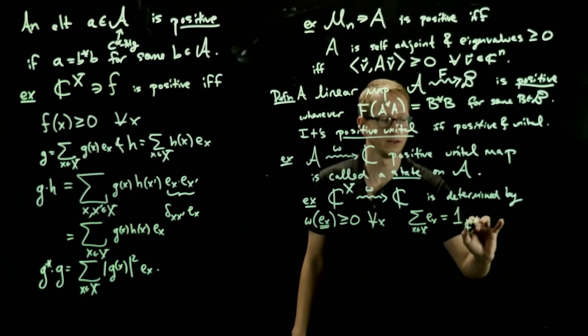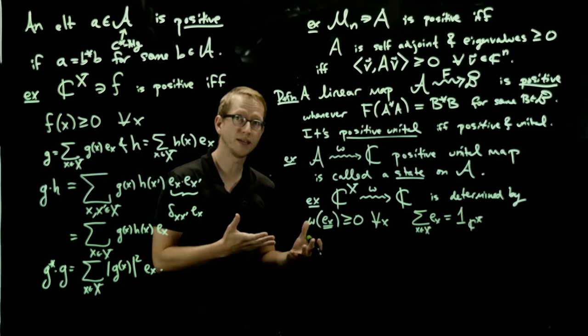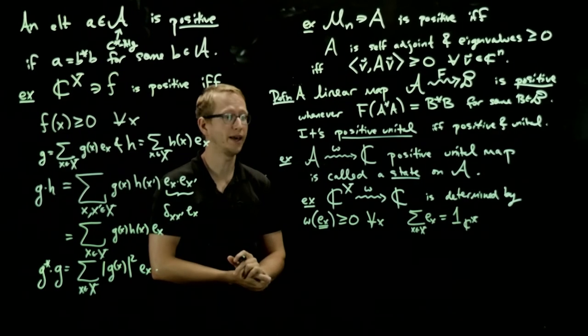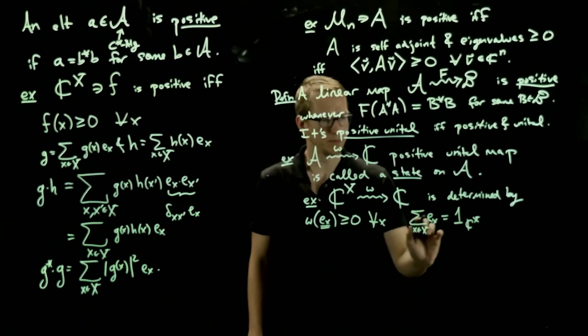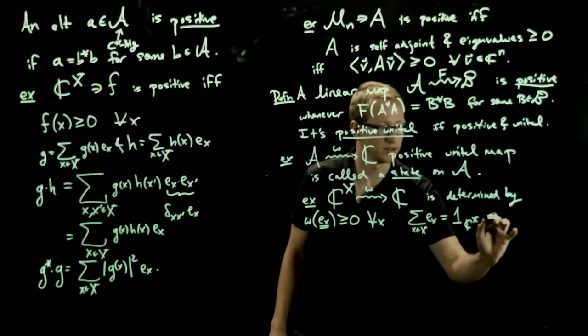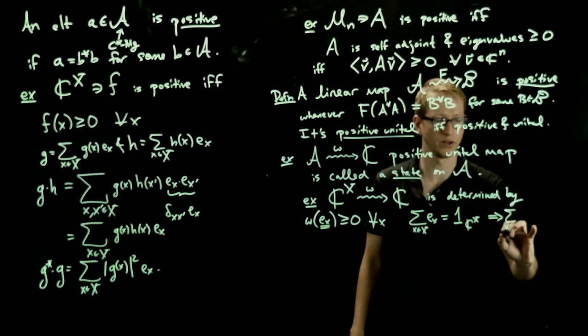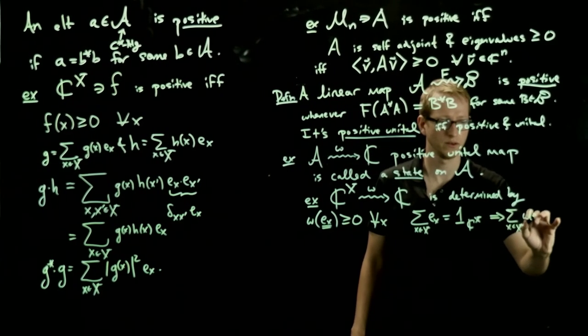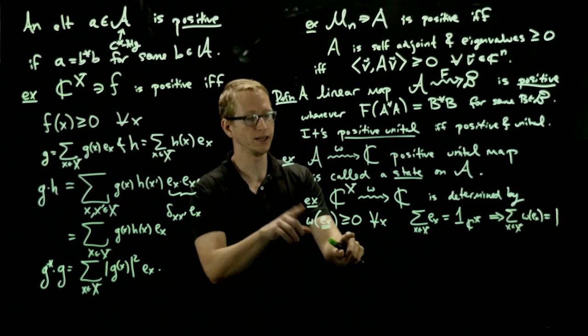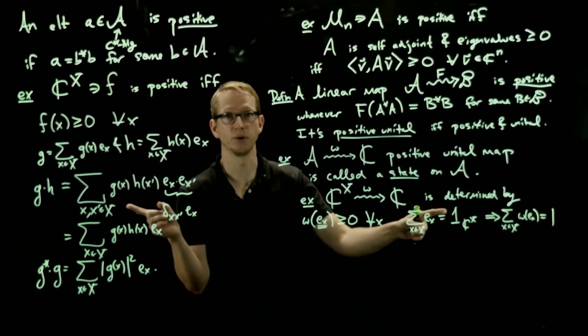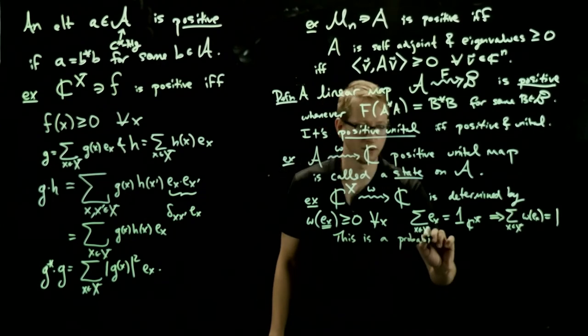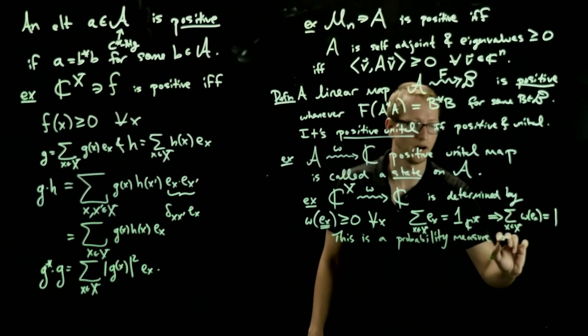And we also know that the sum of these E_X's over all x in X is equal to the identity function on the set of functions from X to C. Why is that? Well, if we take any function and we multiply it by the function that takes the value 1 everywhere, then it doesn't change the function that we have. So, when we apply this result and use the fact that every such state is unital, this implies that the sum of all of these over all x in X is equal to 1. In other words, this gives us a set of numbers indexed by the elements in X that are non-negative and sum up to 1. This is exactly a probability measure on the finite set X.